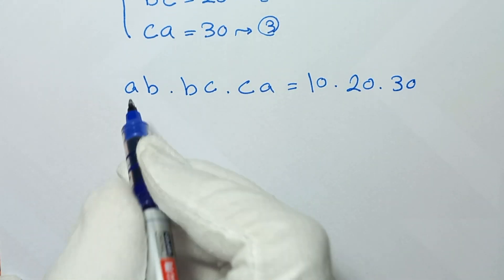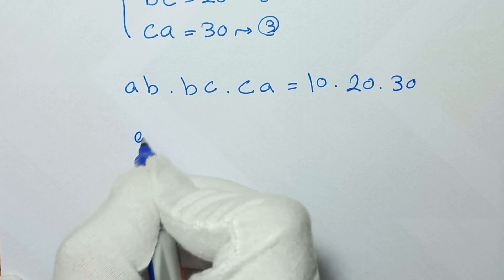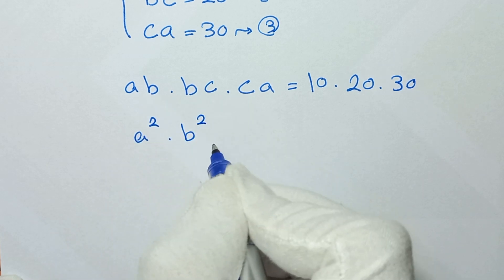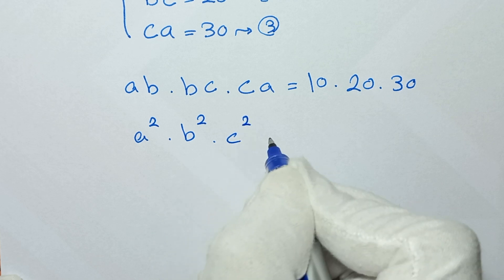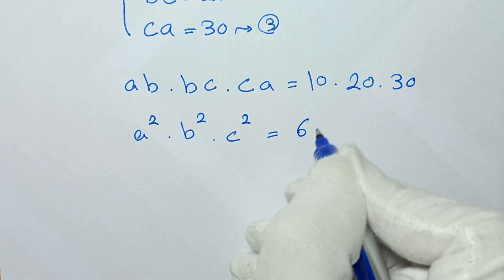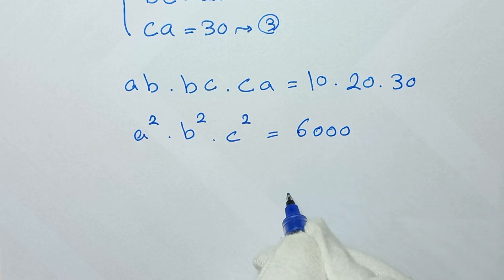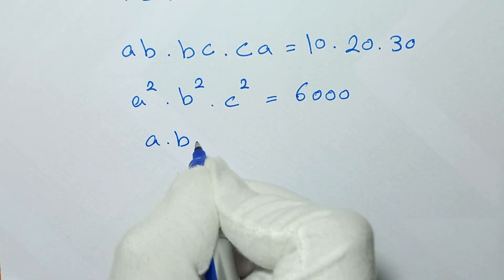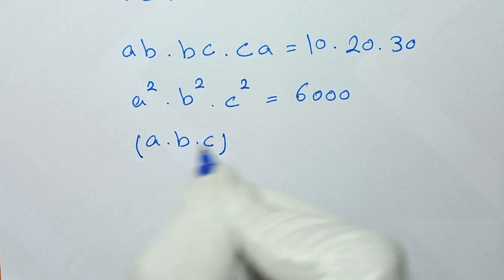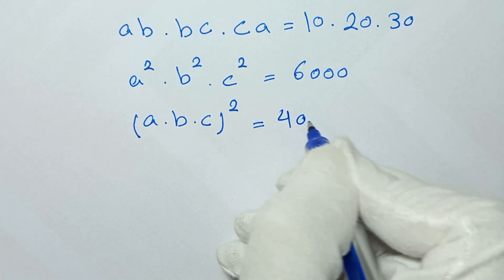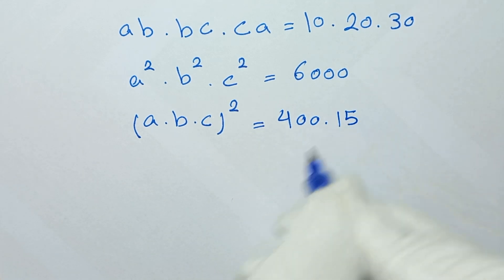And it will be: A times A is A squared, times B times B is B squared, and C times C is C squared, equals 10 times 20 times 30, which is 6,000. We can write this as (A times B times C) whole to the power of 2, equals 6,000. And we can write 6,000 as 400 times 15.